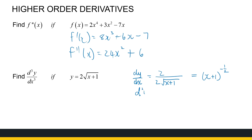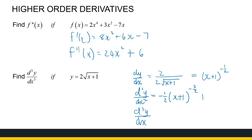The second derivative, d²y/dx², is the derivative of the first derivative. I get minus one-half times (x plus 1) to the power of minus three-halves — that's minus one-half minus 1 — times the derivative of x plus 1, which is just 1, so that doesn't make a difference. And then the third derivative is 3 over 4 times (x plus 1) to the power of minus 5 over 2. So those are higher order derivatives.